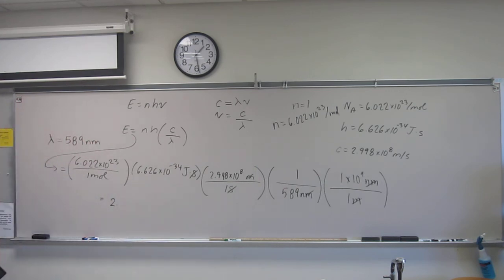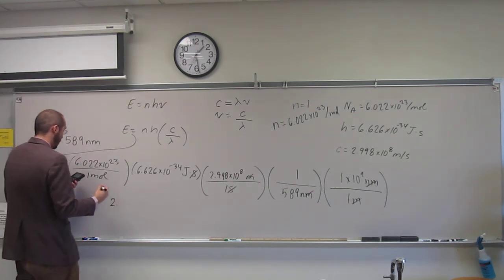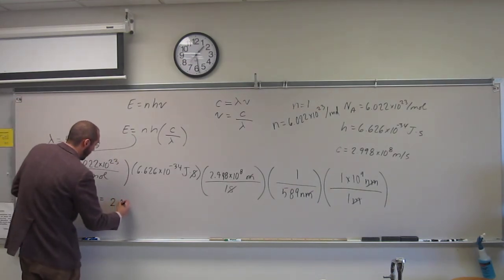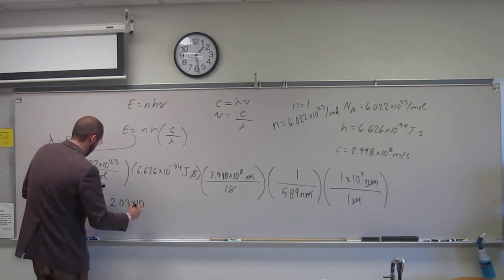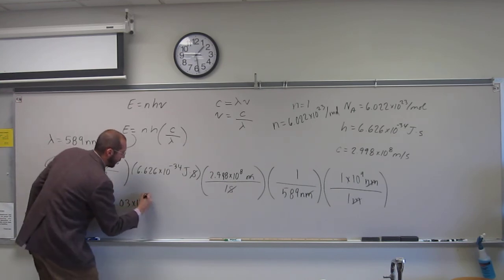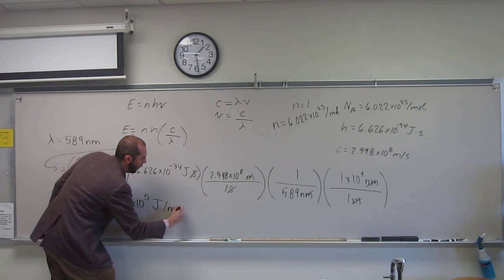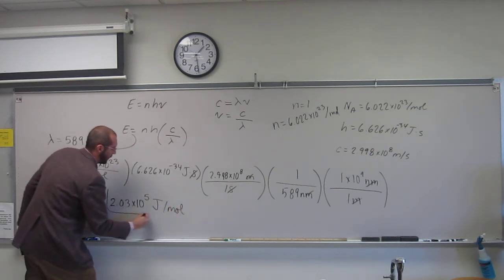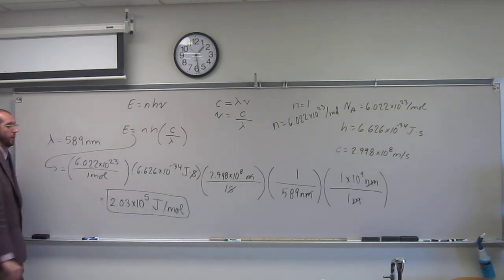And this, hopefully you expect to be a very big number. Especially in joules since that's a small unit. And I got 2.03 times 10 to the 5th joules per mole of these photons. Any questions on that?